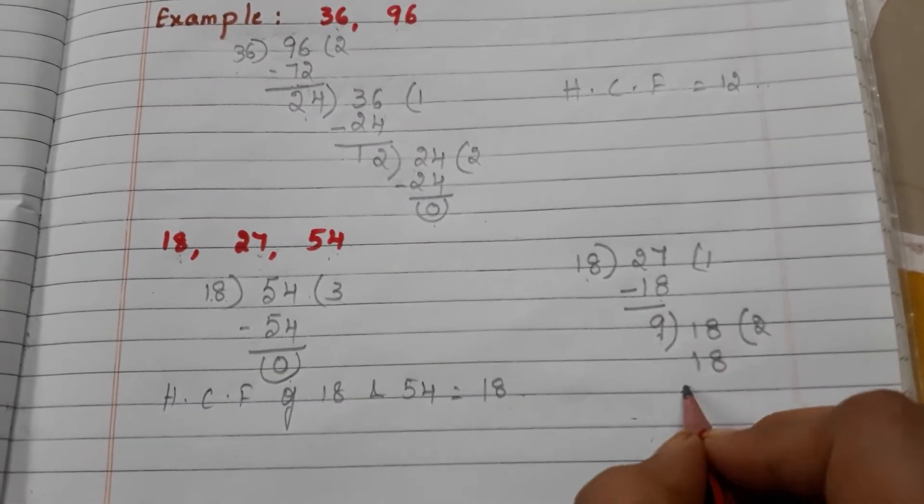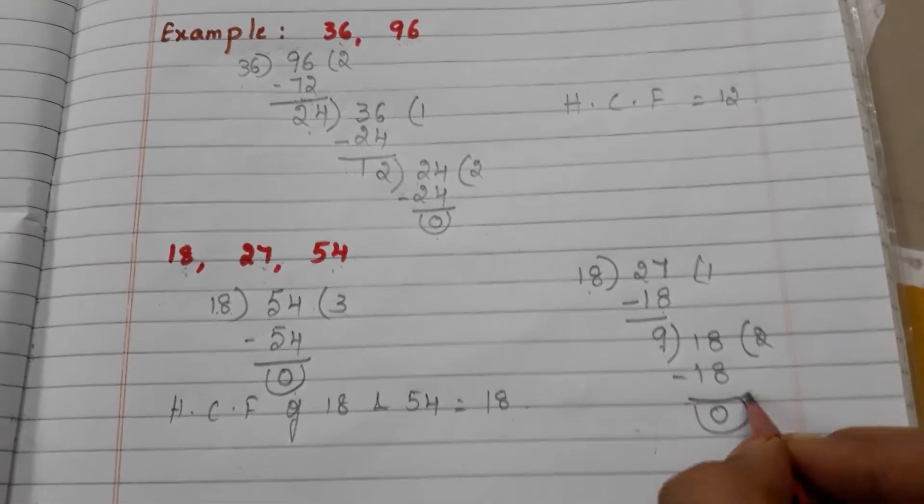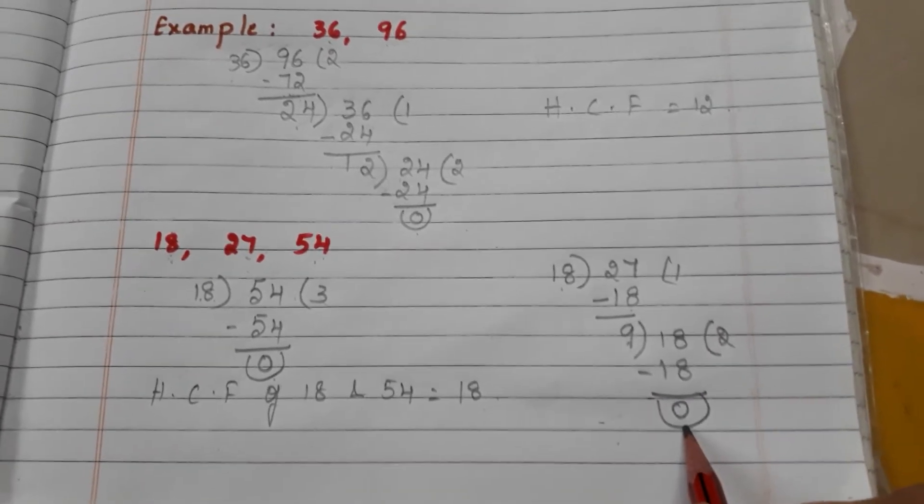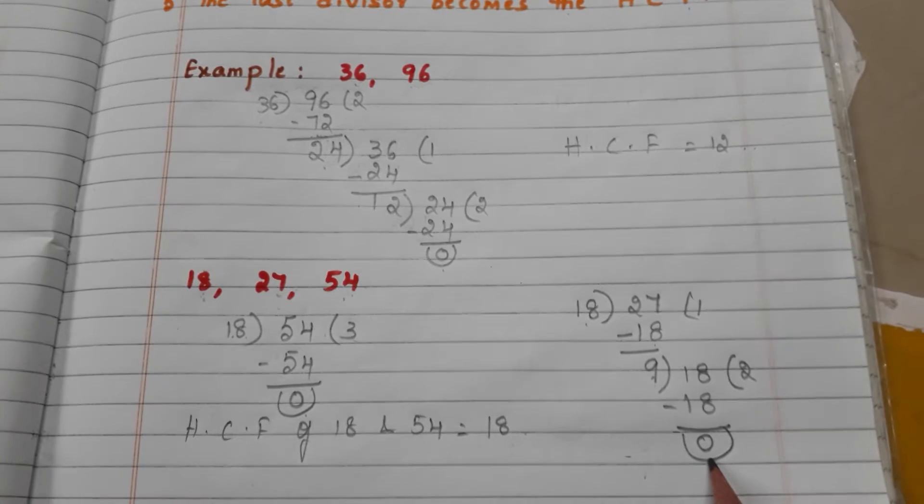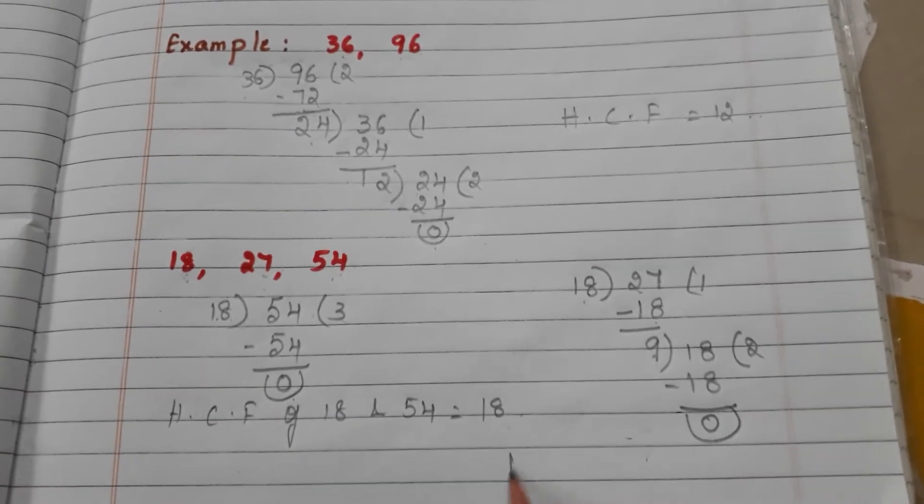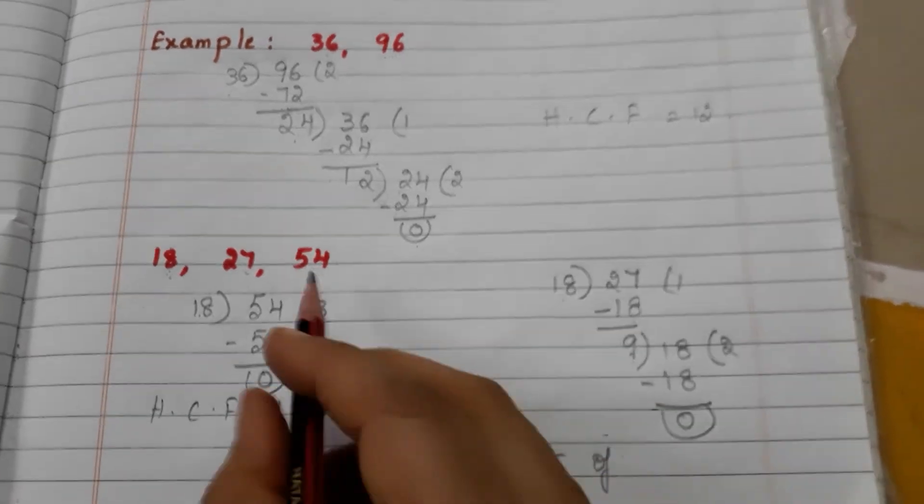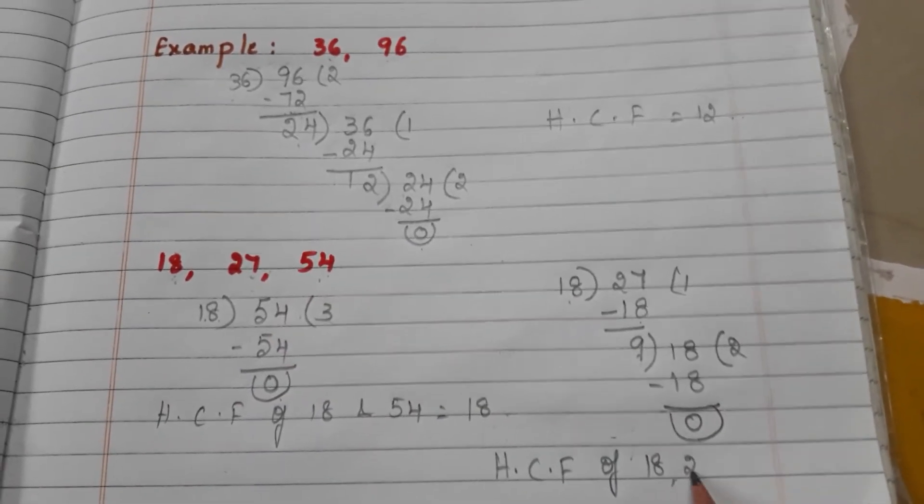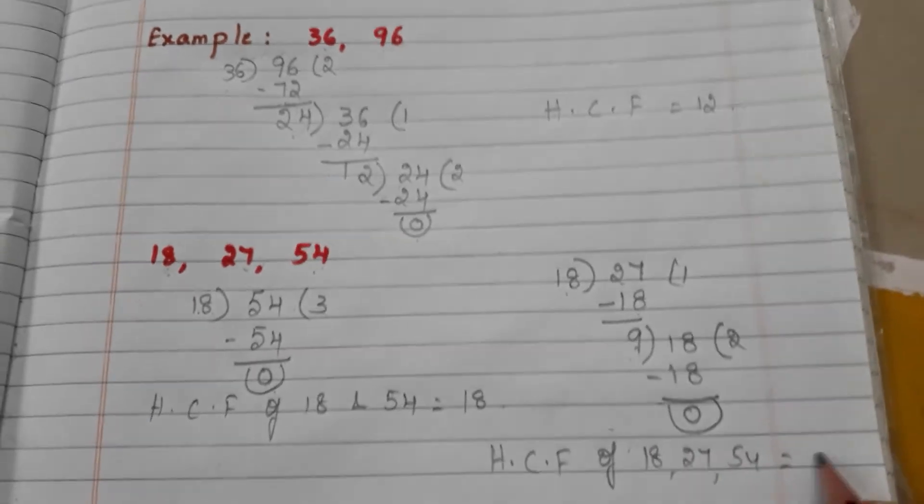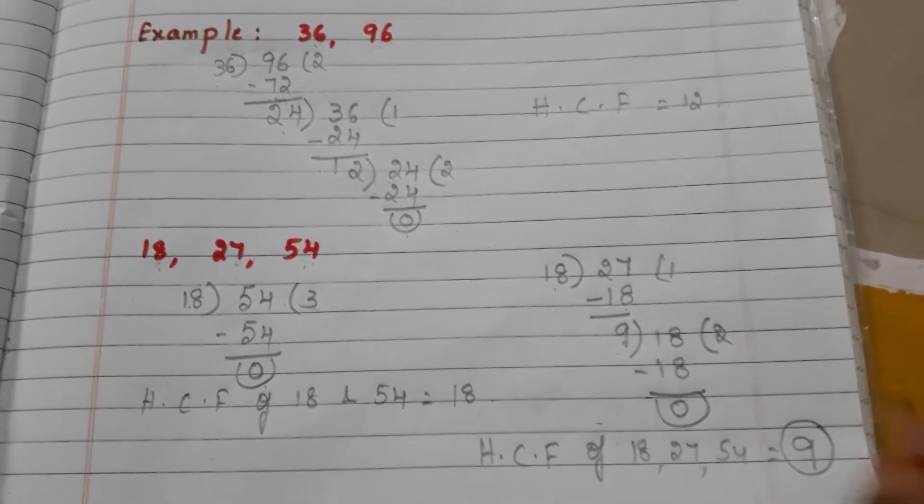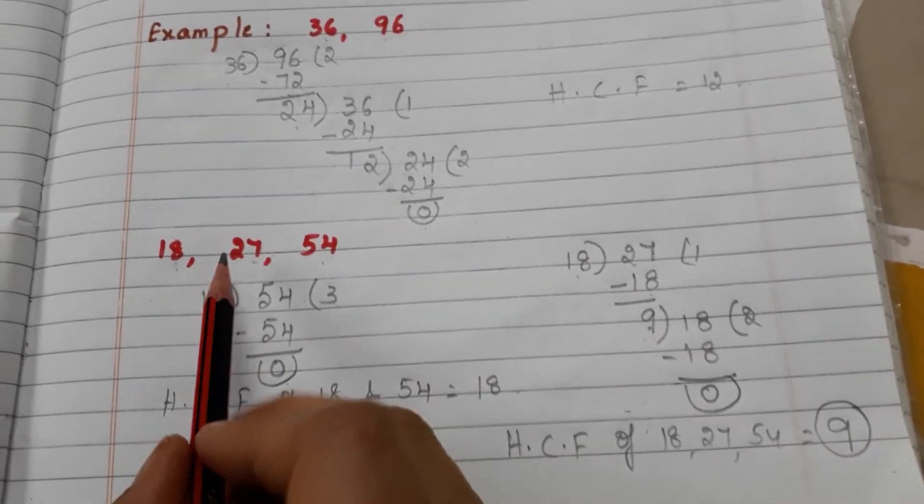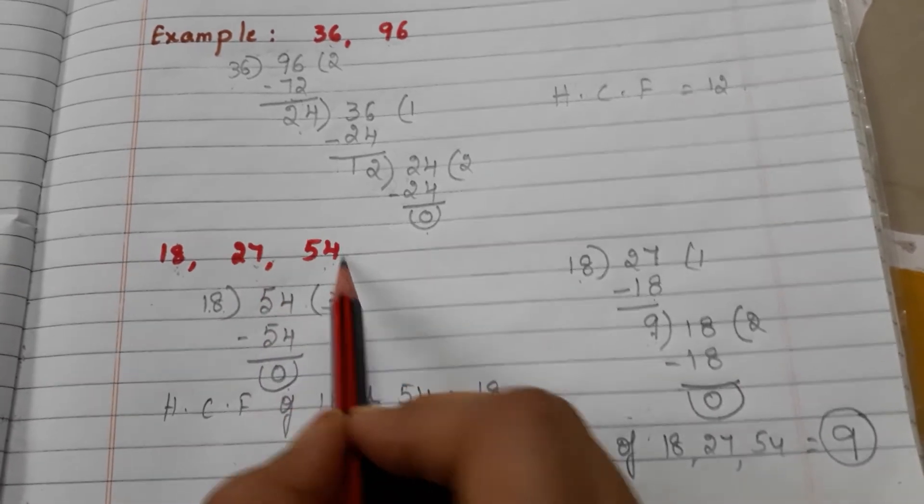Now 9 becomes divisor and 18 becomes dividend. 9 twos are 18, 18 minus 18 is 0. Finally we got the remainder 0. We have to stop the procedure. Now HCF of 18, 27, and 54 becomes 9. This is the HCF of 18, 27, and 54.